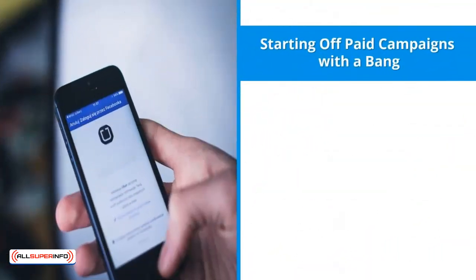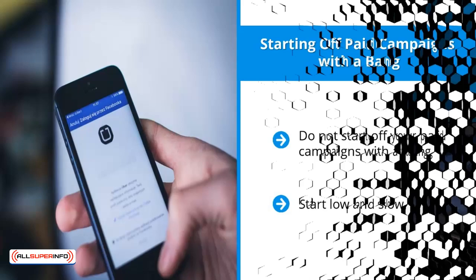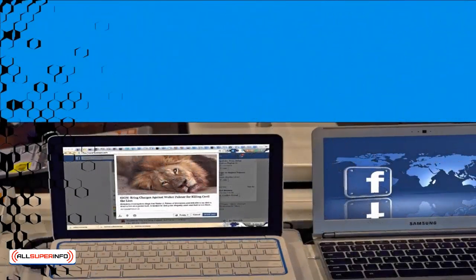Mistake one: Starting off paid campaigns with a bang. Do not start off your paid campaigns with a bang. Start with a free campaign first. Build your audience organically, get some consumer intelligence, then you should have the information you need to put together an experimental paid marketing campaign. Start low and slow. The worst thing you can do is jump in with a massive budget and absolutely no clue.